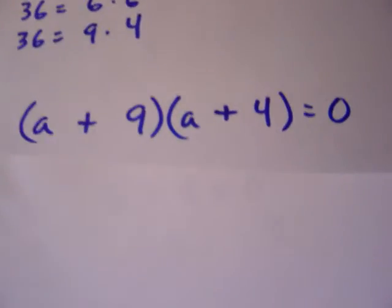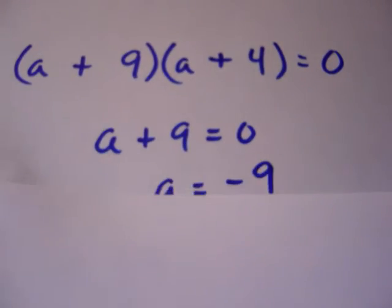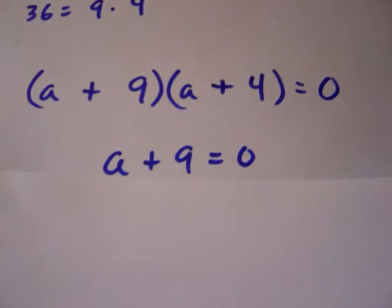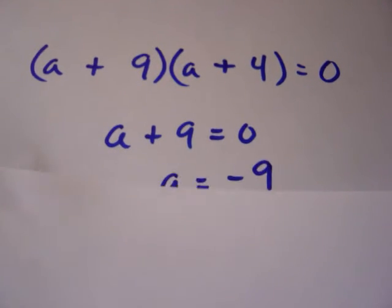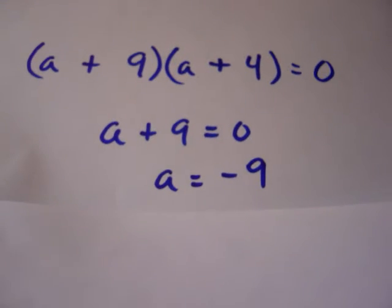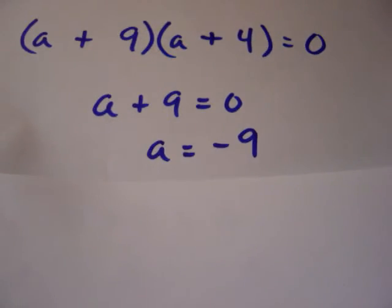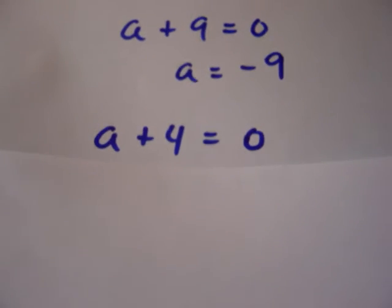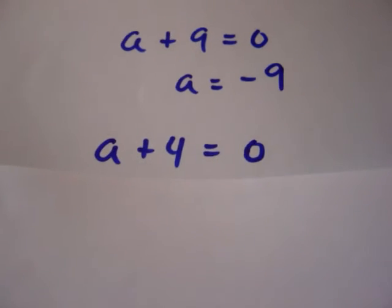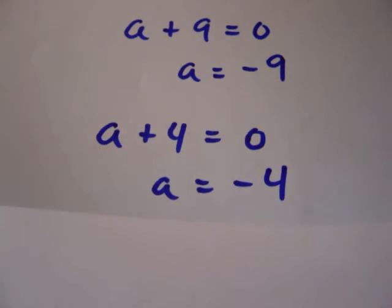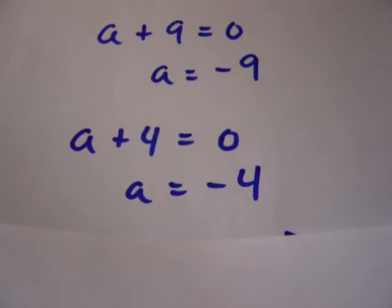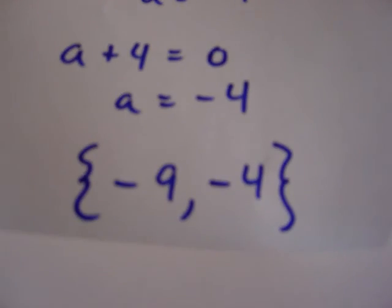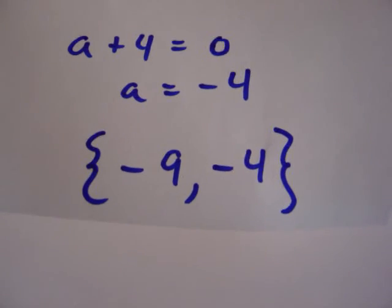Let's look at a plus 9 equals zero. If a plus 9 equals zero, what's a? Subtract 9 on both sides, and you end up with a equals negative 9. That's one of your solutions, but there's the other. Consider when a plus 4 equals zero. If a plus 4 equals zero, what is a? Subtract 4 on both sides, and you end up with a equals negative 4. So, your solutions are negative 9 and negative 4.